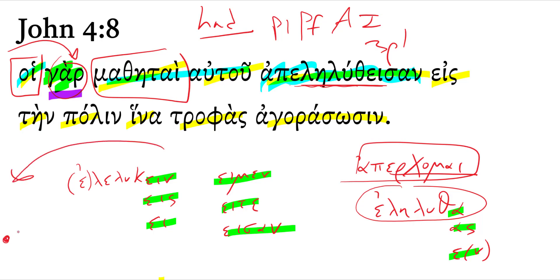This happened pre-past, and we're discussing the state that has resulted from that in the past time frame. The state is, they're gone. They departed, and they're not there. For his disciples had gone away.